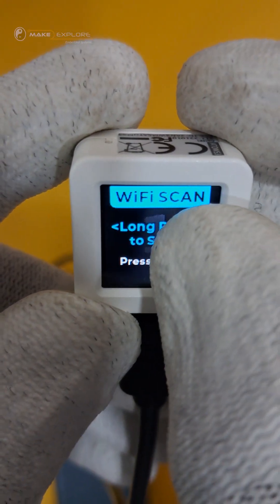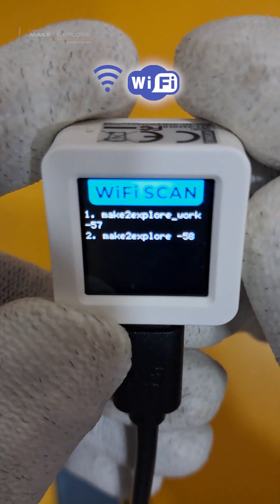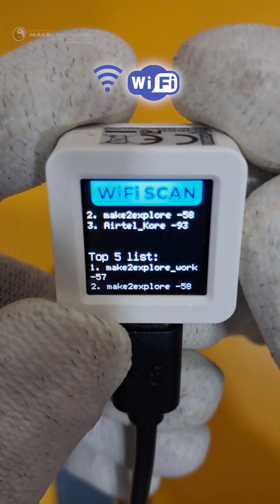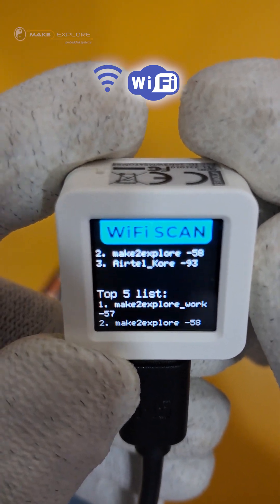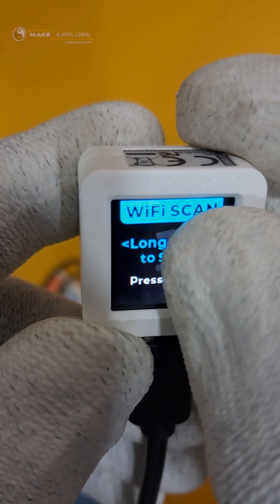And to enter into a particular option, we have to long press the screen. As soon as we did that, it started scanning the nearby WiFi networks and displays them like this. Now, let's get back to the main menu by performing a long press.